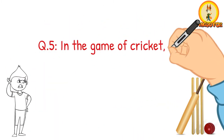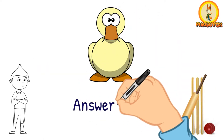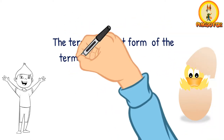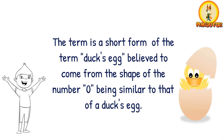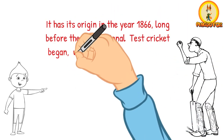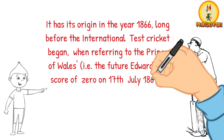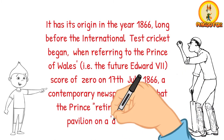In the game of cricket, which bird's name means scoring no runs? The answer is duck. The term is a short form of "duck's egg," believed to come from the shape of the number zero being similar to that of a duck's egg. It has its origin in the year 1866, long before international test cricket began, when referring to the Prince of Wales's — that is, the future Edward VII's — score of zero on 17 July 1866, a contemporary newspaper wrote that the Prince retired to the Royal Pavilion on a duck's egg.